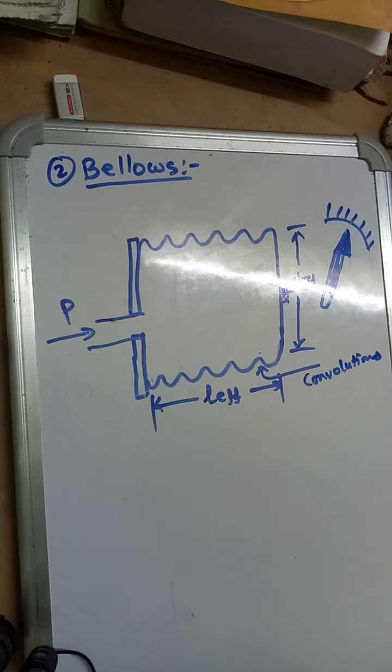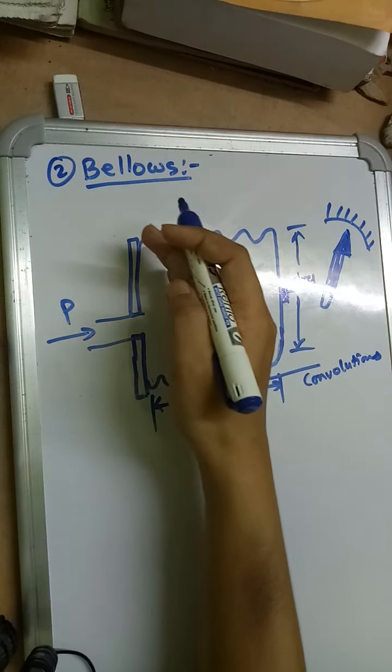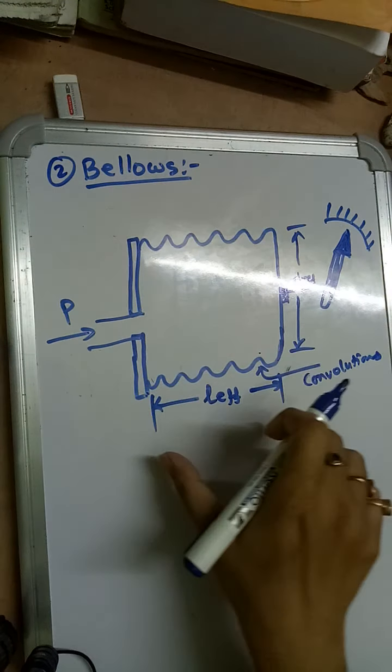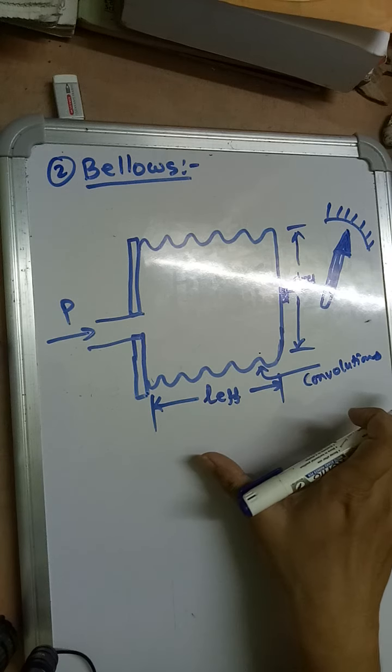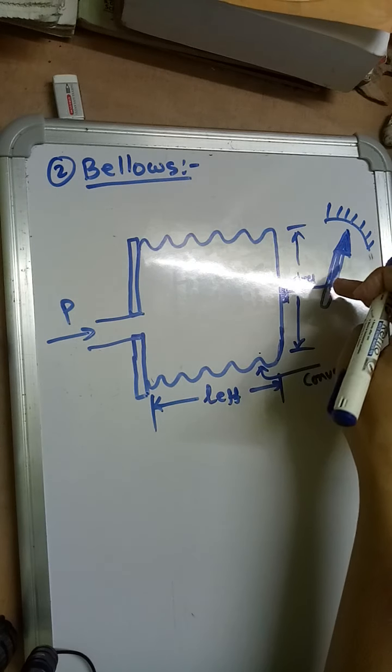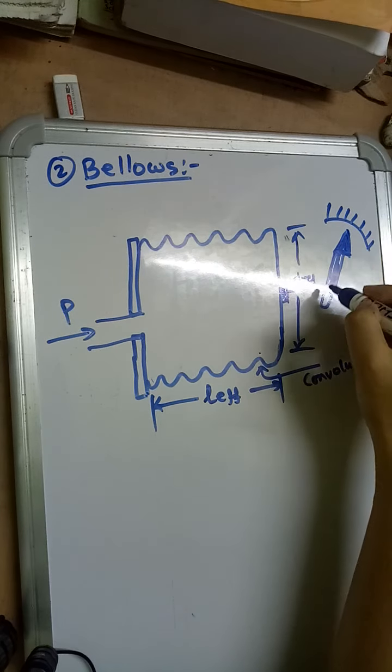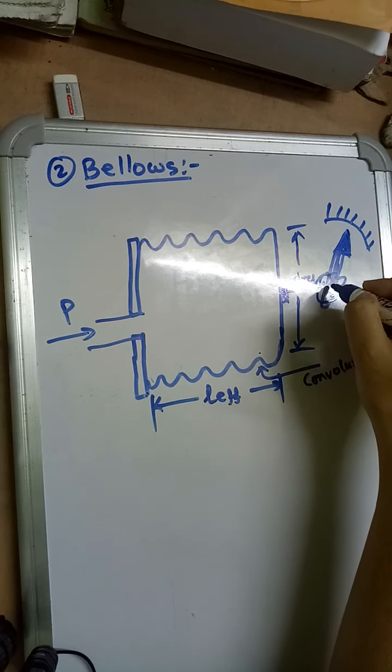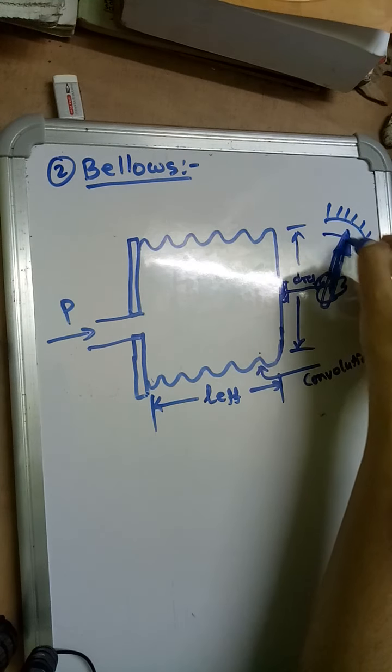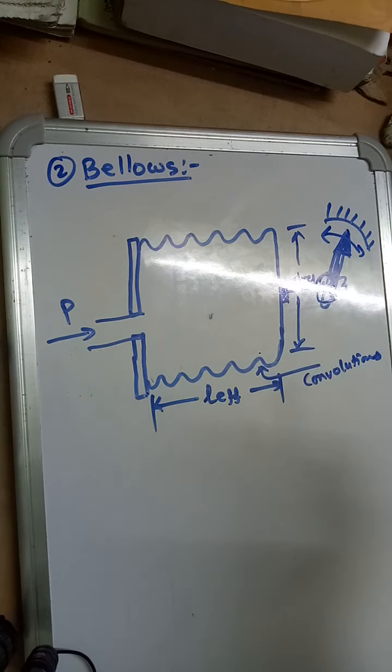When the pressure is applied, these convolutions will expand and this L E double F will expand. As it expands, this gear will move. Some gear technique will be there. Due to this, the pointer will move in these directions and mechanical output will be obtained. How to convert it to electrical form I will discuss later.